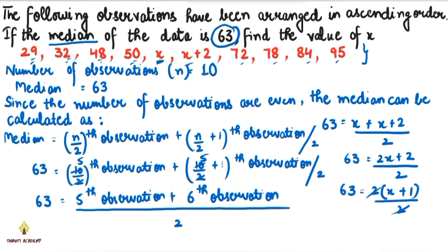So our median gives us: 63 = x + 1. When 1 goes to the left-hand side, it becomes minus 1. So x = 63 − 1, that is, x is equal to 62.